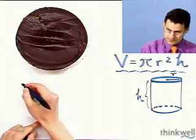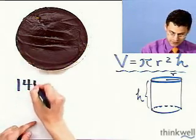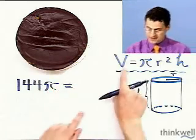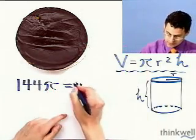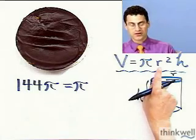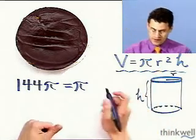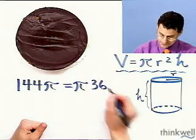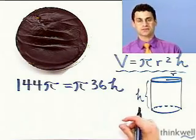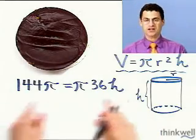So there's the formula, and what do we know? Well, we know the radius is six inches. So let's set up the equation. The volume, which we're told is 144 times pi, equals pi times r squared. Now r we're told is 6, so r squared is 36, times h. The question is, what is h — what is the height? There's the equation we need to solve, and notice how simple that is. The hard part was actually coming up with the equation.